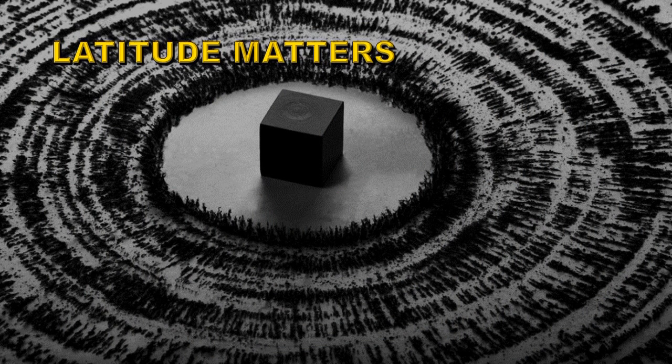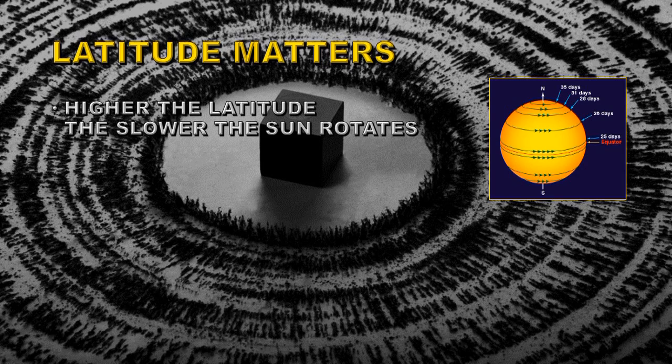As I said, the higher the latitude on the Sun, the slower the Sun rotates. So the equator is moving faster than the poles, and the intermediate latitudes are moving at some rate between those two values.